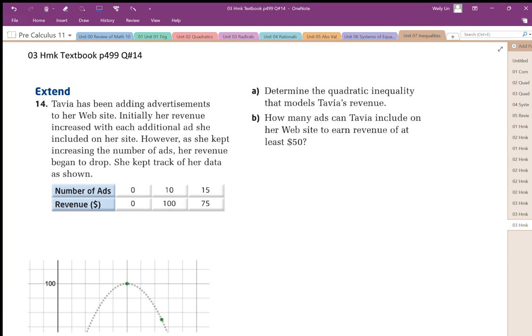Question number 14 says, Tavia has been adding advertisements to her website. Initially, her revenue increased with each additional ad. So she kept track of this, and as she added some ads, at 10 ads she increased her revenue to $100, but at 15 ads, it was only $75. So we ended up losing some money as we added more ads.